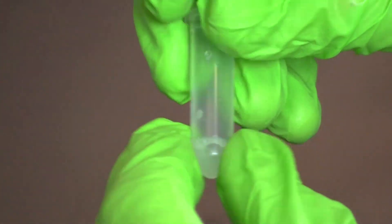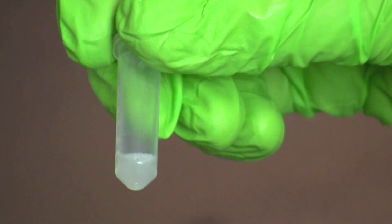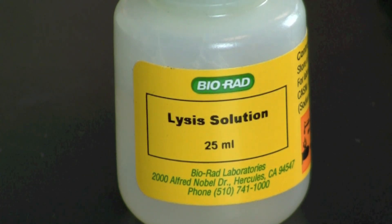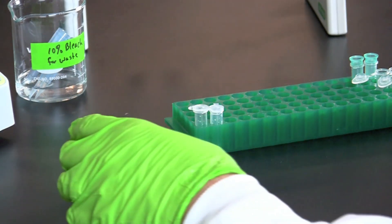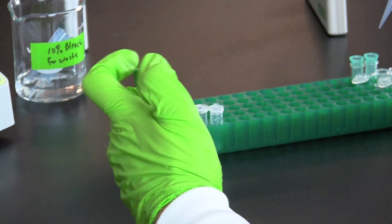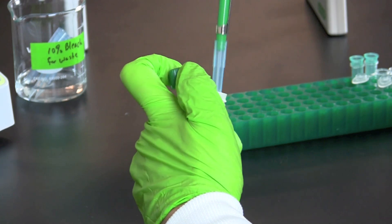Resuspend the pellets by vortexing or flicking the bottom of the microcentrifuge tube to break up any clumps of bacteria. Pipet 250 microliters of lysis solution into each tube.